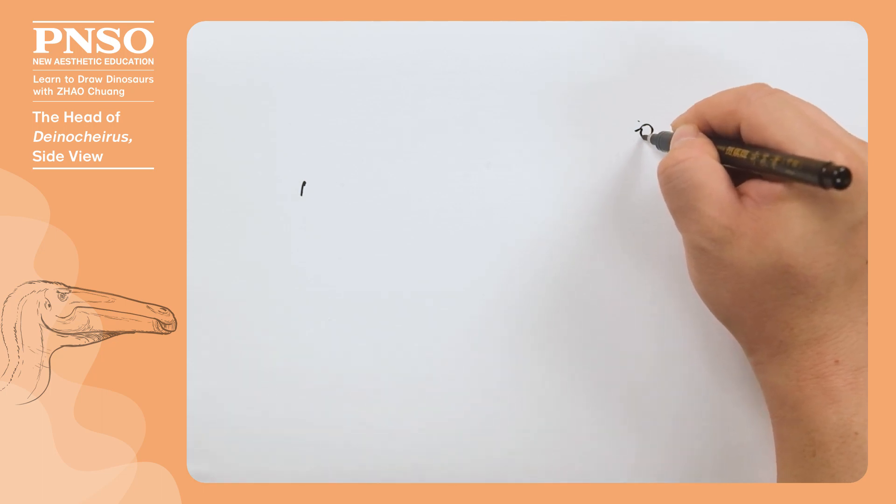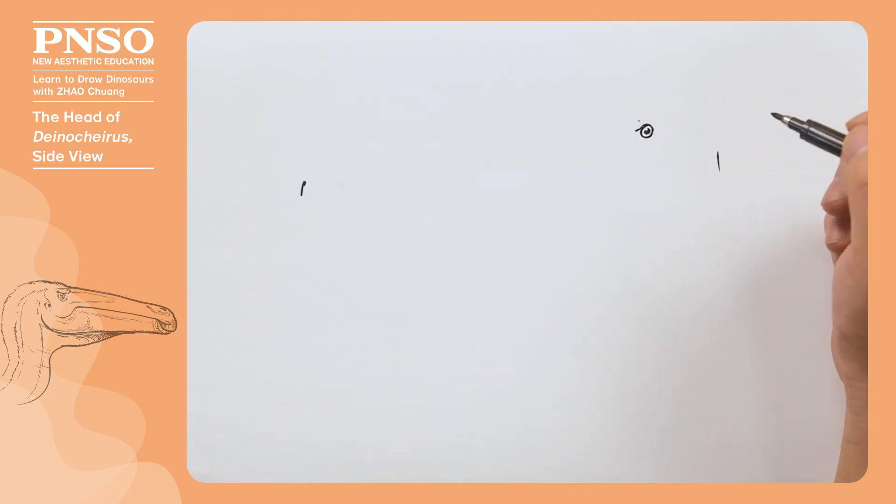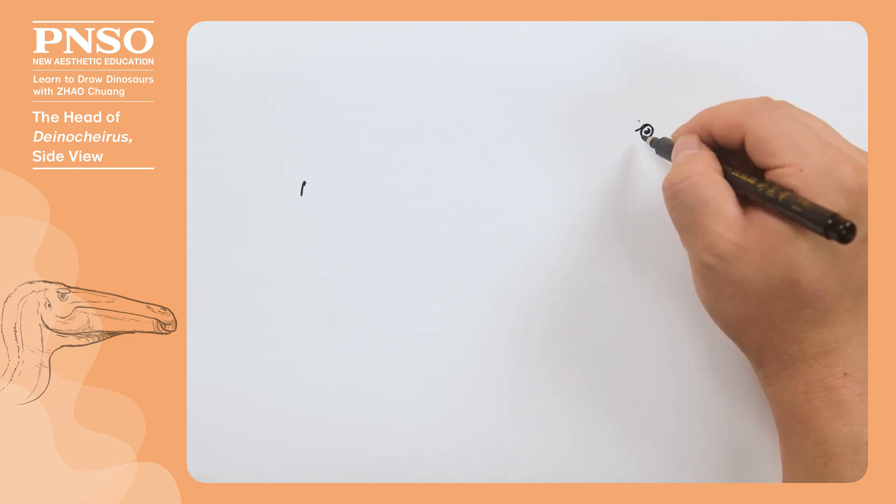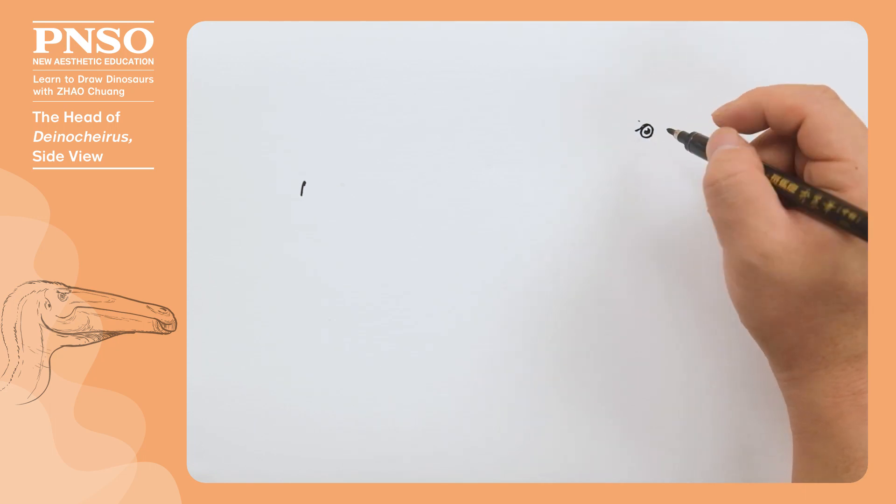We draw a relatively round shape, and then the pupil inside. Although its skull was relatively large, its eyes were very small in a shape of round.